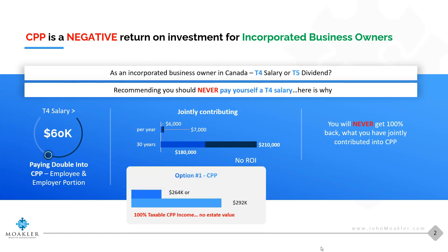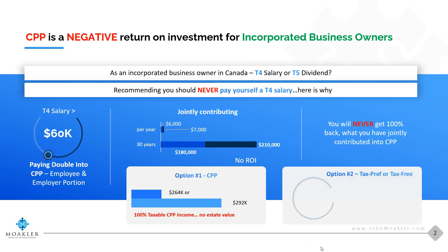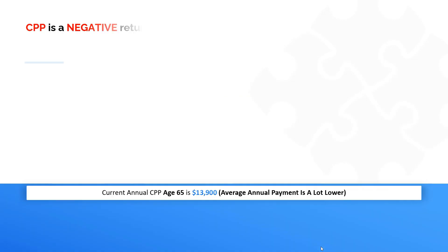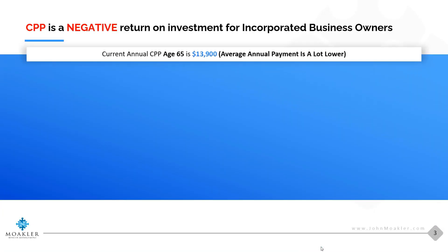Let me give you two options. Option number one: you contribute to the Canada Pension Plan and in retirement you receive $264,000 or $292,000 — that's 100% taxable on your personal tax return, and upon your passing there's no estate value for your beneficiaries. Option number two: you have $418,000 in retirement and it's either tax-preferred or tax-free money, and upon your passing there is an estate for your beneficiaries. The annual maximum CPP right now is $13,900.